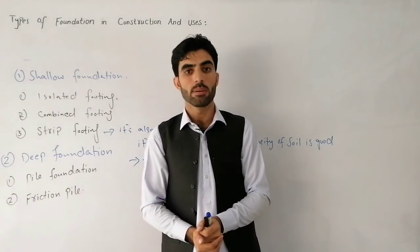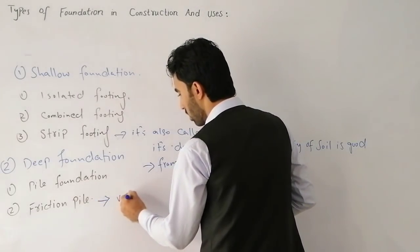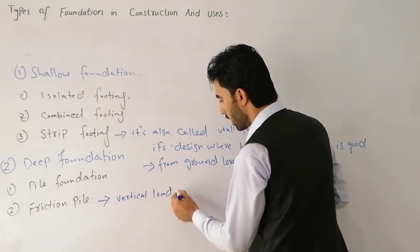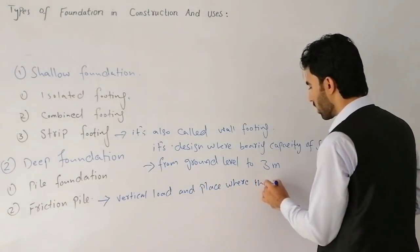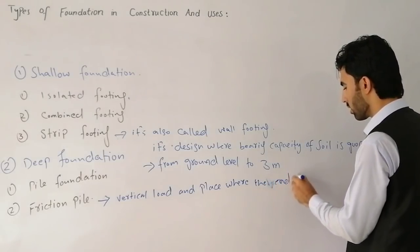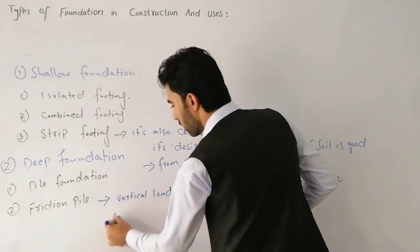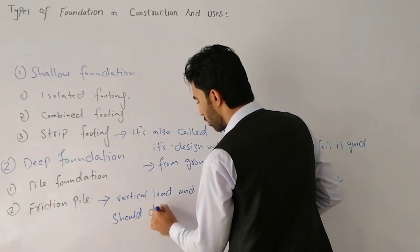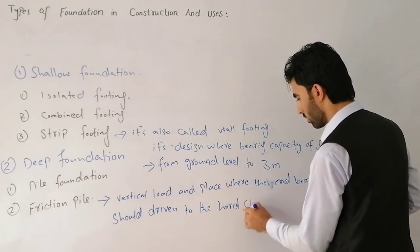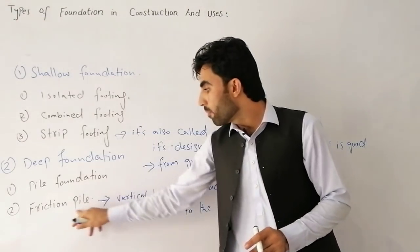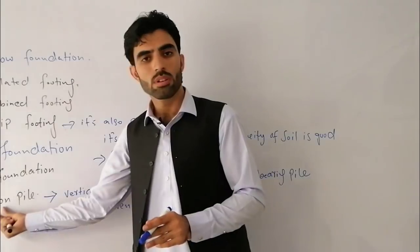The last type is friction pile. Friction pile is used for vertical loads. End-bearing piles are driven from the surface down to hard strata. Especially, friction piles are used for heavy loads and can transfer the load through friction.